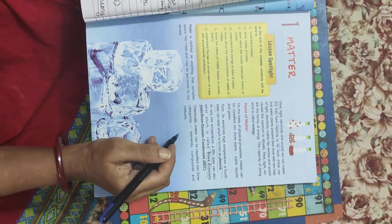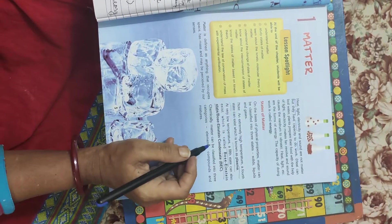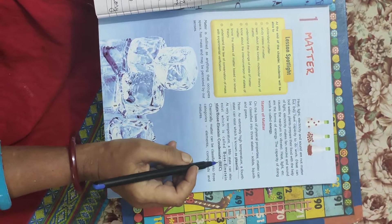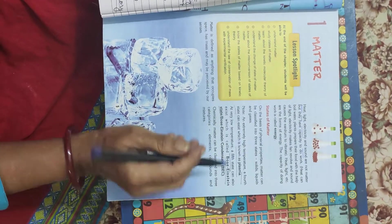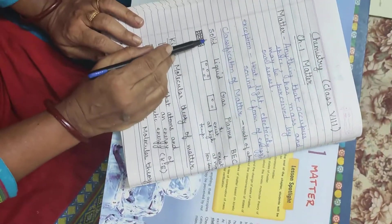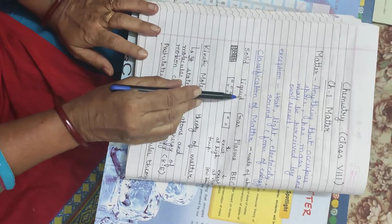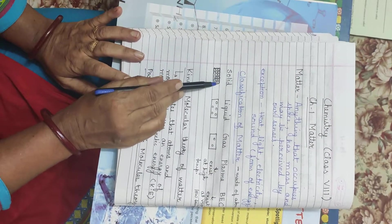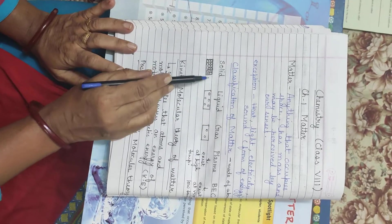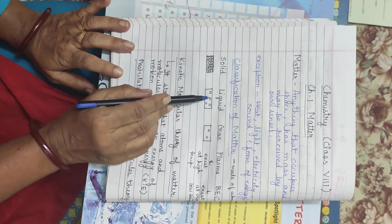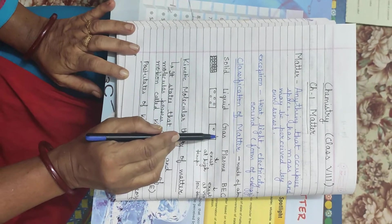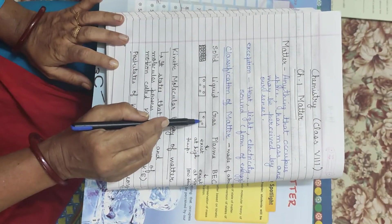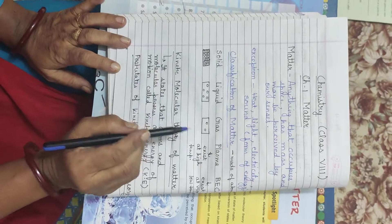So on the basis of arrangement of atoms, we have three main categories of matter. They are solid, liquid, gas. In solid, the atoms are very closely packed. In liquid, the atoms are little far apart. And in gases, they are far, very, very far apart.